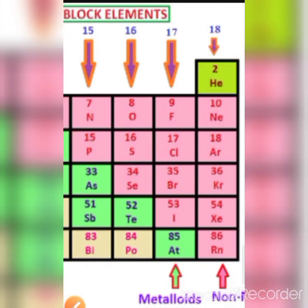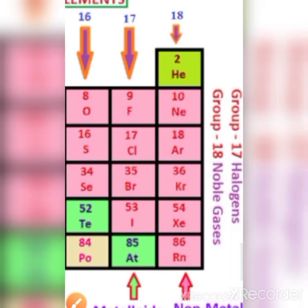In the 16th group, there are three non-metals: oxygen, sulfur, and selenium. The metalloid in the 16th group is tellurium. Only one metal is present in the 16th group, and that is polonium.